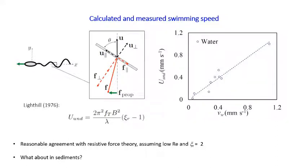Using the nominal value for water of CR = 2, we can predict the undulation speed as a function of what the worm is actually observed to do. For these trials, the data organizes itself around a slope of one — meaning within all the approximations, the undulation speed calculated by Lighthill's theory does capture the speed with which worms swim in water.